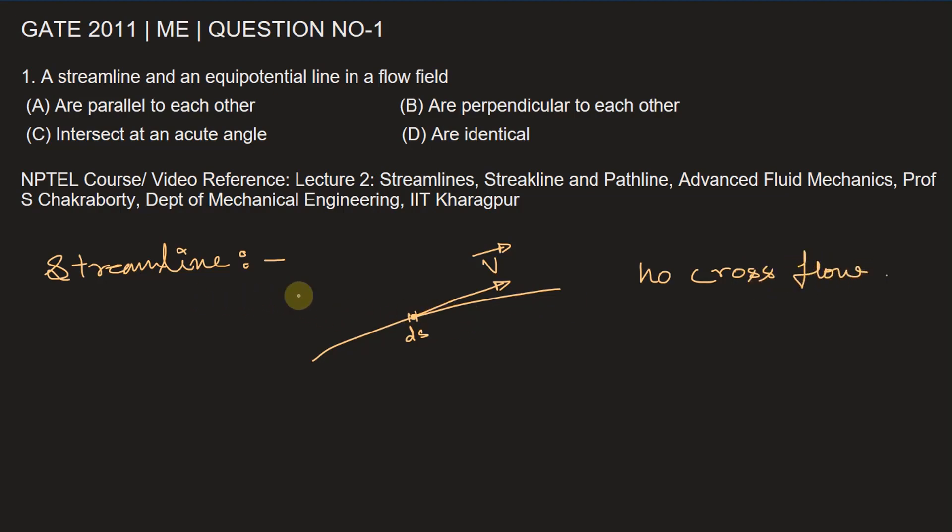That's how we obtain the equation of streamline: ds vector cross v vector equals zero. This represents no cross flow.